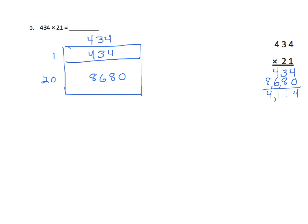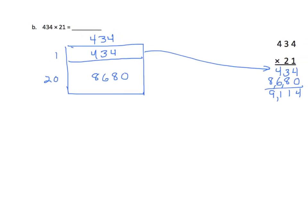And again, if we look at our area model over here, we can see that this corresponds with our first partial product when we multiplied from the ones place. And the second box, or the lower one, corresponds to our second partial product. So our answer is nine thousand one hundred fourteen, and we will this time remember to put it up on the top, nine thousand one hundred fourteen.